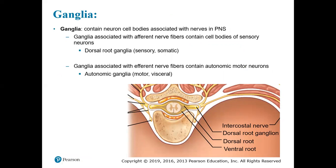When we talk about ganglia — and we've mentioned ganglia already — the ganglia will contain neuron cell bodies that are associated with nerves in the peripheral nervous system. Usually it's a meeting point where we can have synapses. The ganglia associated with afferent nerve fibers contain cell bodies of sensory neurons. The dorsal root ganglia, coming out of the dorsal side of the spinal cord, is sensory somatic — it's pulling in information from the body wall.